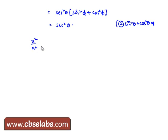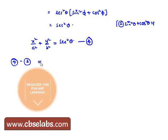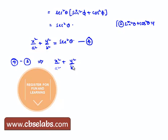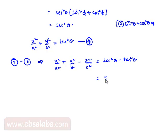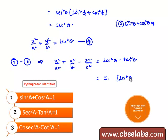So here we got x square by a square plus y square by b square is equal to secant square theta. Let it be equation number 4. Now let us subtract equation 3 from equation 4, then we get x square by a square plus y square by b square minus z square by c square is equal to secant square theta minus tan square theta, which is equal to 1.